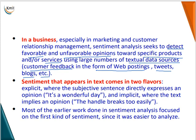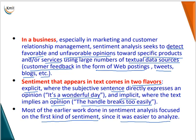Sentiment that appears in text comes in two flavors: explicit and implicit. Explicit is where the subjective sentence directly expresses an opinion — for example, 'It is a wonderful day.' Implicit is where the text implies an opinion — for example, 'The handle breaks too easily.' Most of the earlier work done in sentiment analysis focused on explicit sentiment since it was easier to analyze.